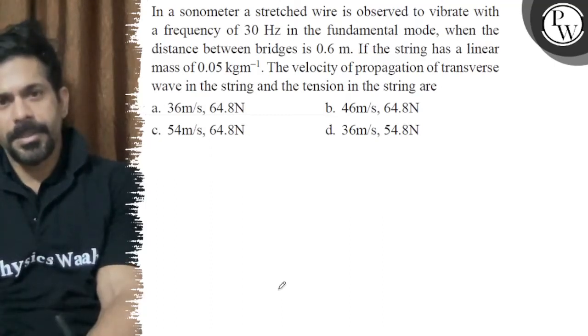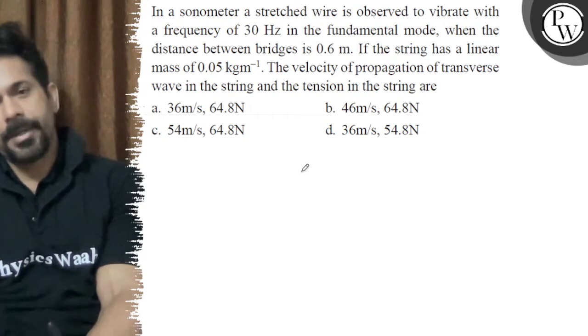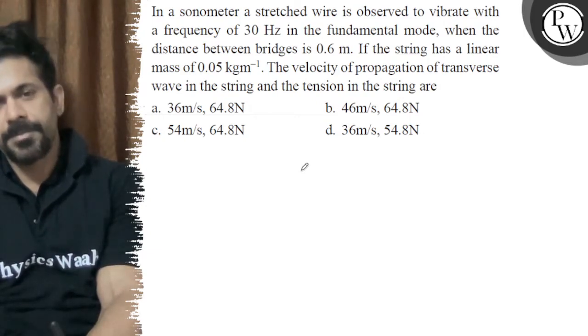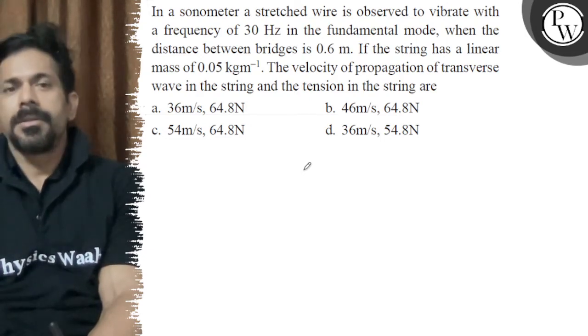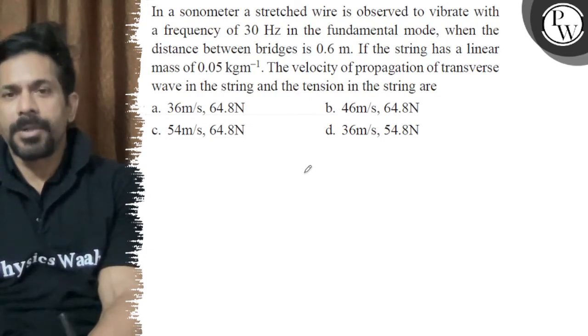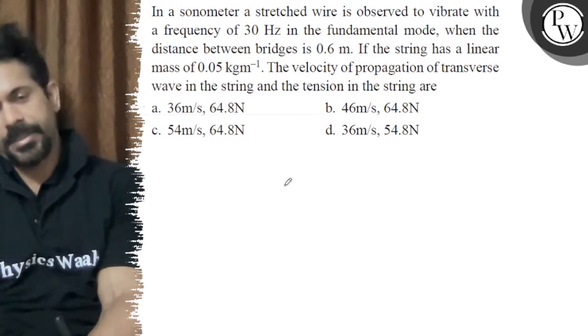Hello, let's see the question. In a sonometer, a stretched wire is observed to vibrate with a frequency of 30 Hz in the fundamental mode when the distance between the bridges is 0.6 m. If the string has a linear mass of 0.05 kg/m, the velocity of propagation of transverse wave in the string and the tension in the string are...